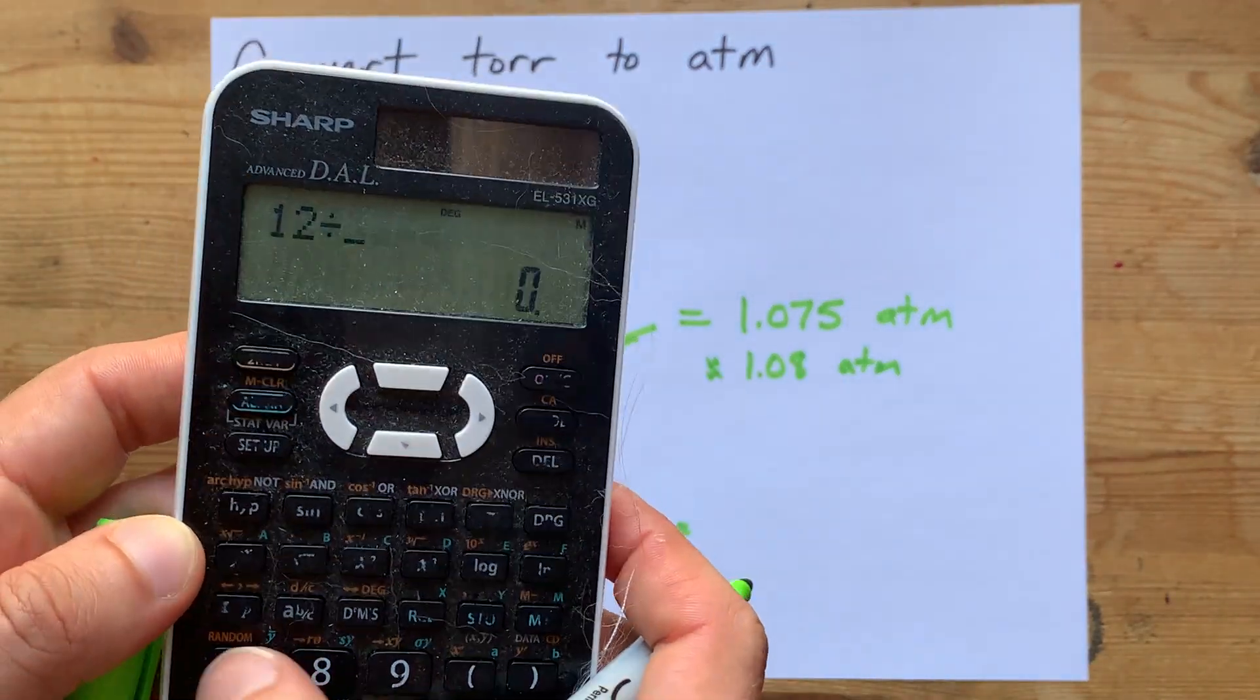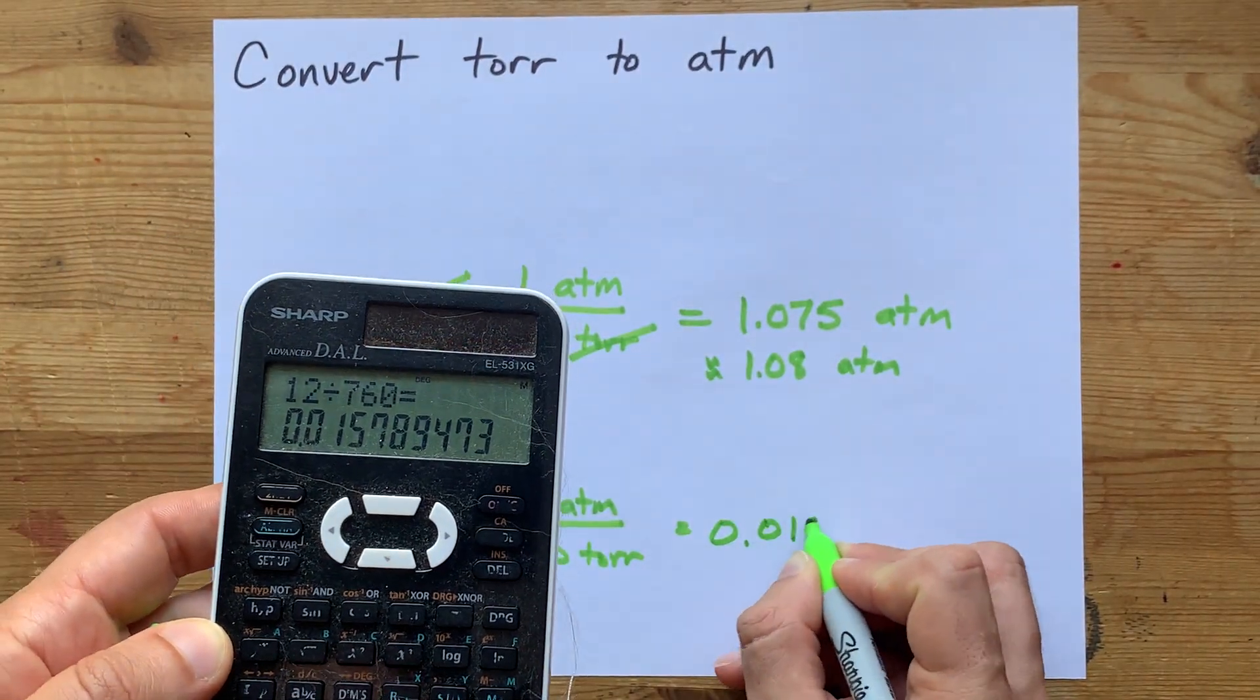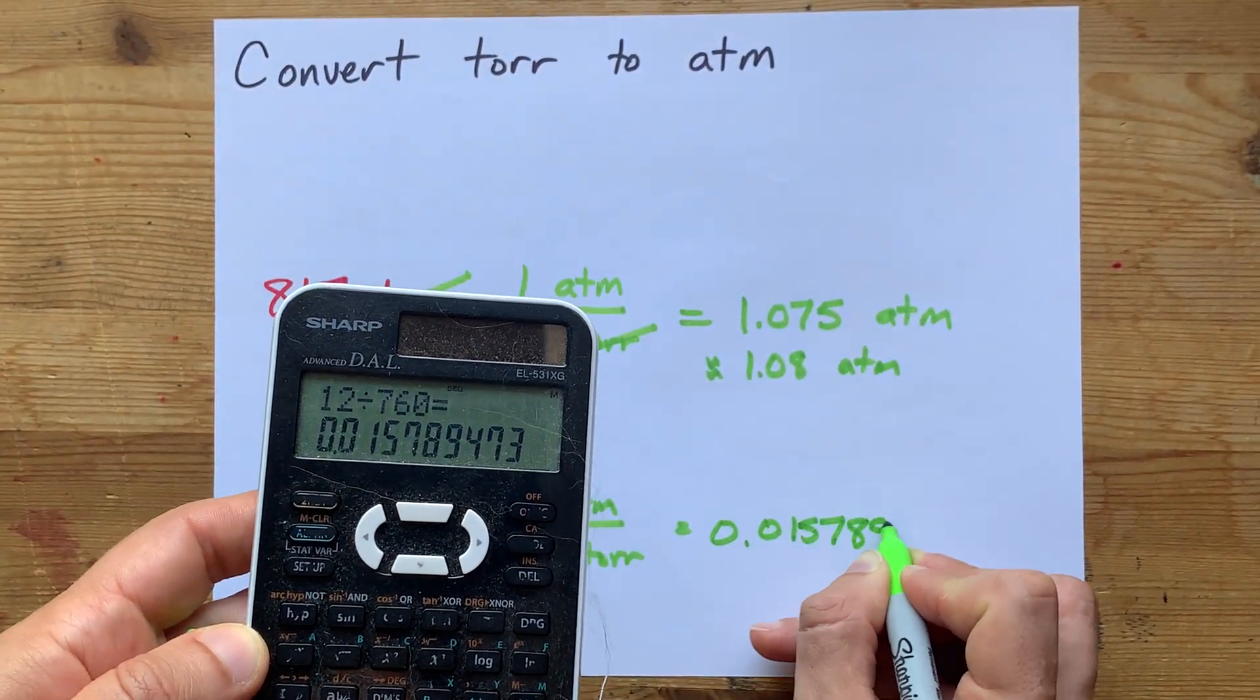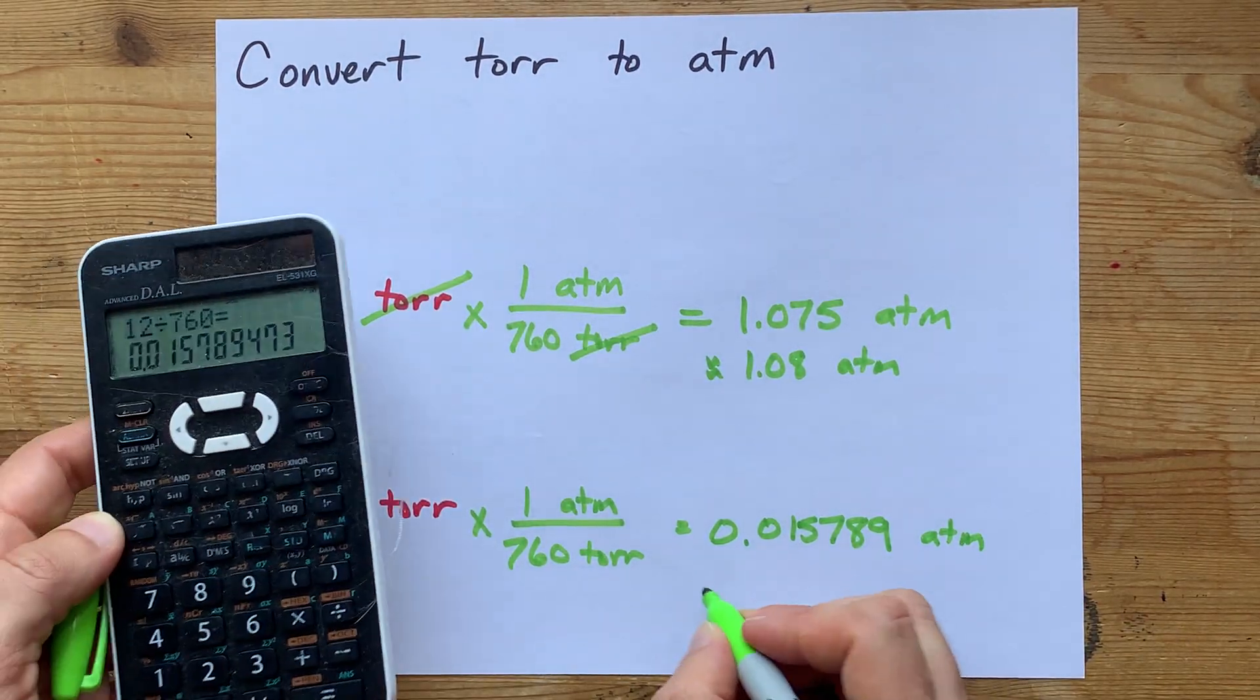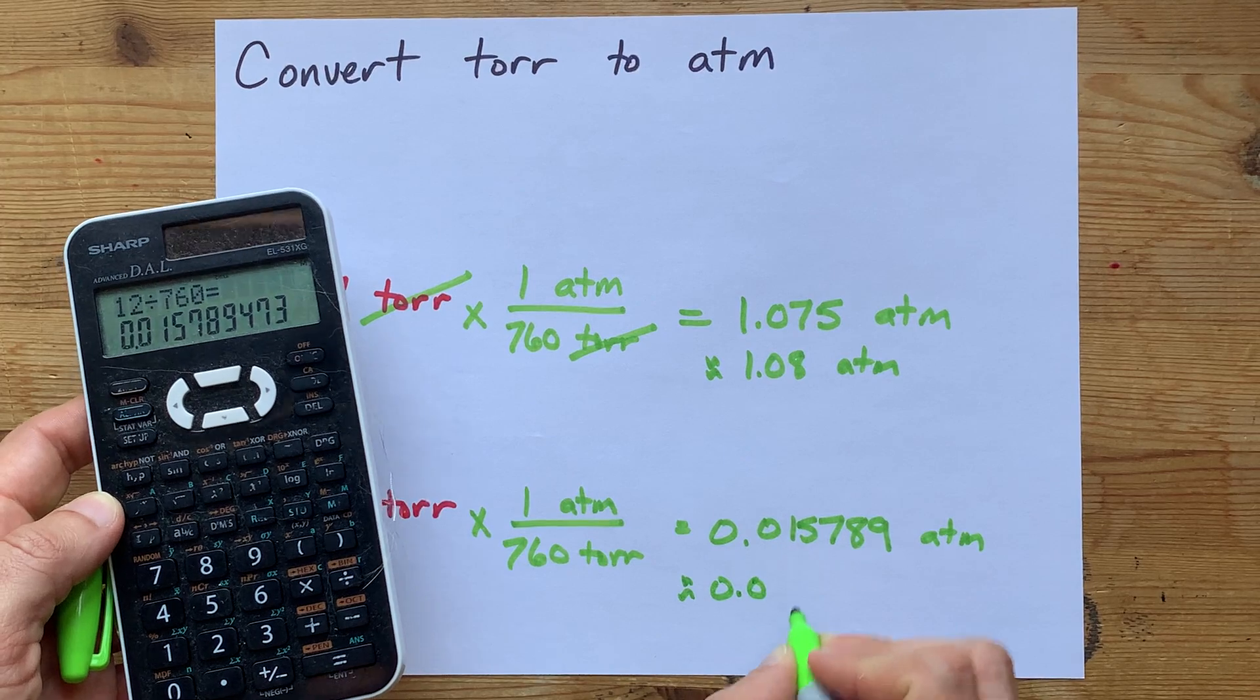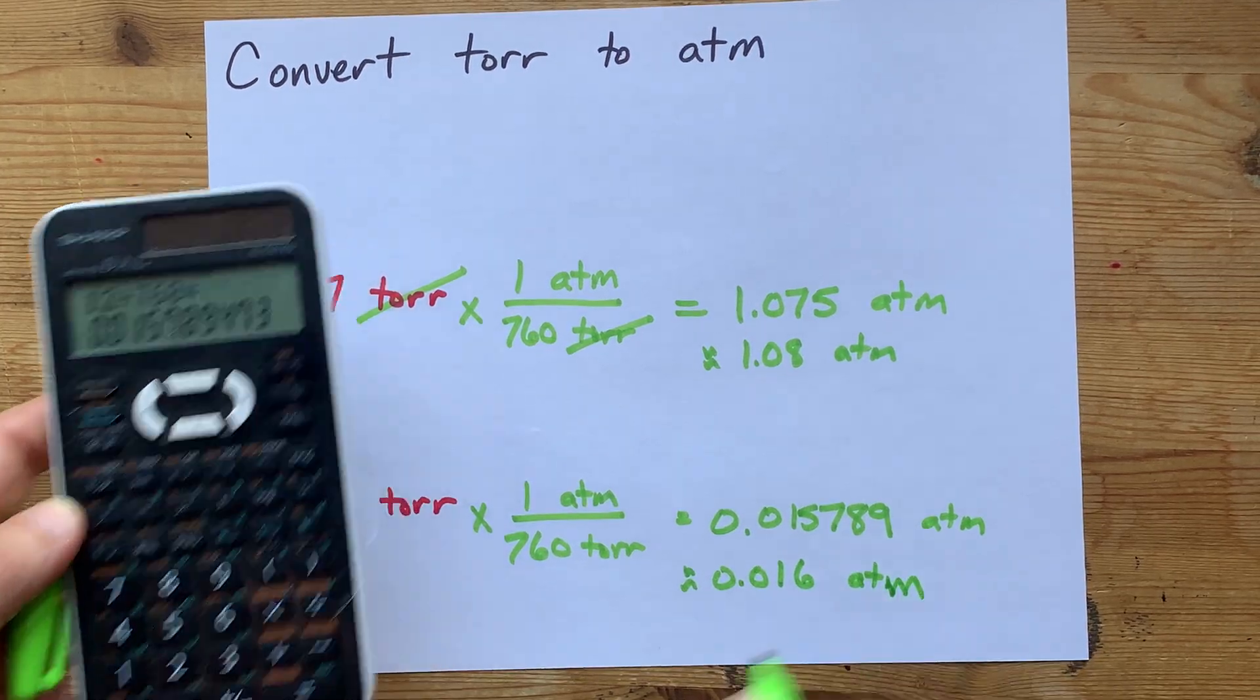12 divided by 760 gives me 0.015789 atmospheres, and with significant figures, those don't count, 1, 6. So 0.016 atmospheres.